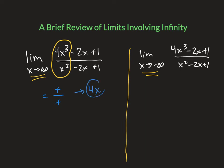When you put infinity into 4x, you get infinity. So while this limit doesn't have a real number value, we characterize this limit as positive infinity. This function takes off towards positive infinity, and we also know there's no horizontal asymptote because of that. If this limit doesn't have a real number value, there's no horizontal asymptote. We play the same game when we send a function to negative infinity.